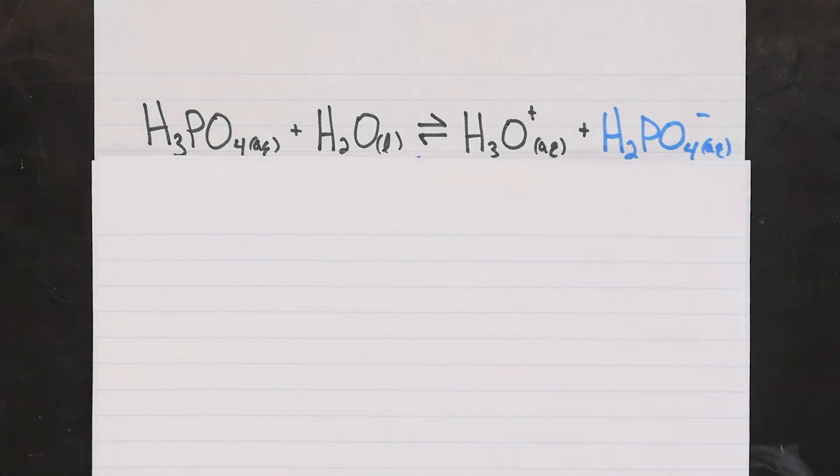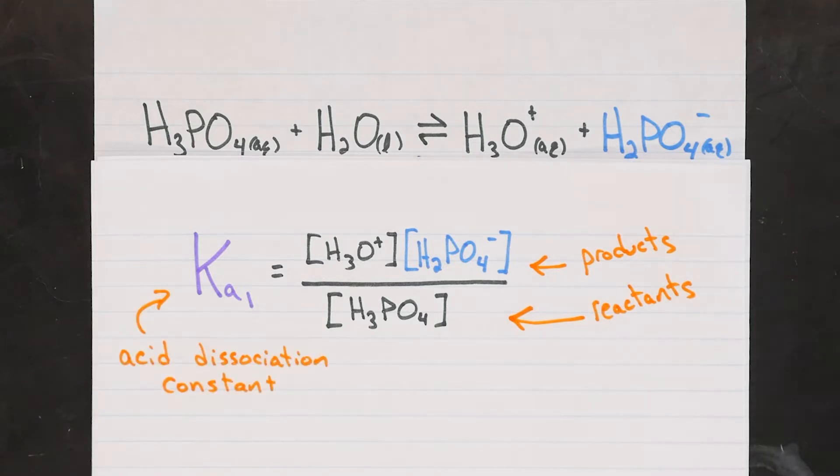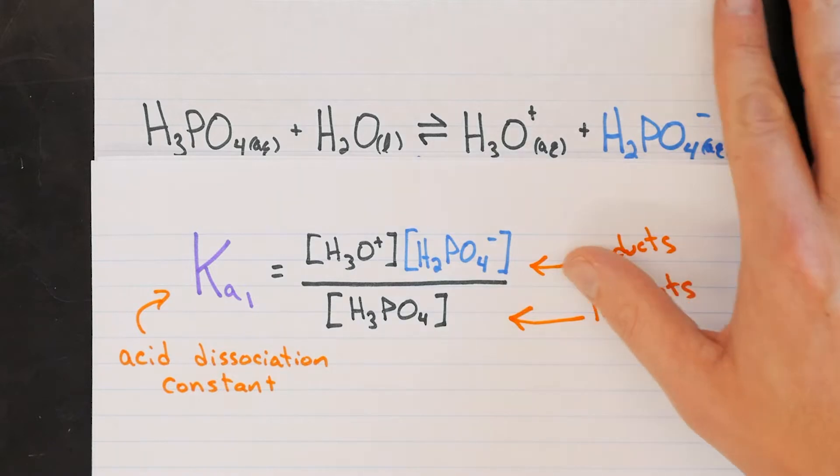Well, each of these processes has an equilibrium constant associated with it, which tells us what the ratio of concentrations of products to reactants must be. The bigger this ratio, the more likely it is that the molecule will give up its proton, and the stronger the acid. So we'd like to know what the ratio is, which is otherwise known as the acid dissociation constant or the ionization constant of the acid.